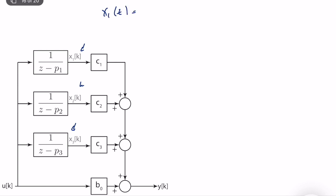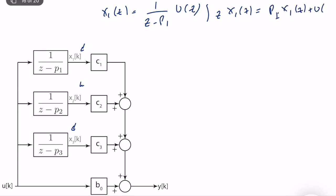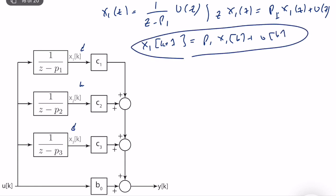x1(z) is equal to 1 over z minus p1 times u(z), which means that z times x1(z) equals p1 times x1(z) plus u(z). Finding the difference equation gives x1(k+1) equals p1·x1(k) plus u(k). The most critical part of diagonal canonical form is that each state only depends on itself — for that reason it is the simplest form and easiest to understand, manipulate, and compute.